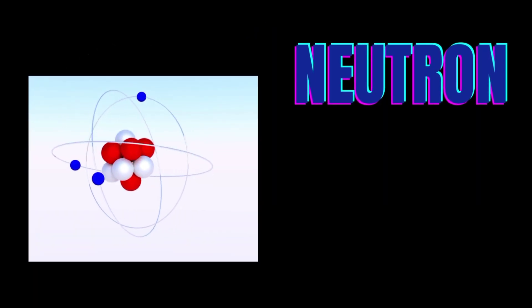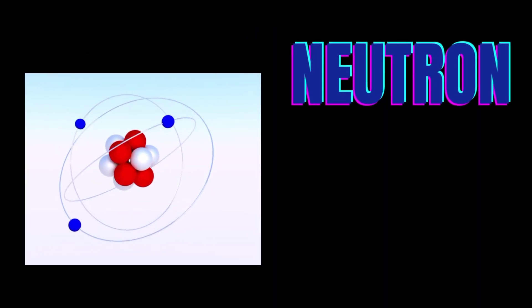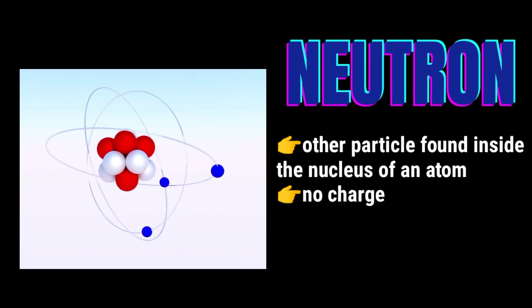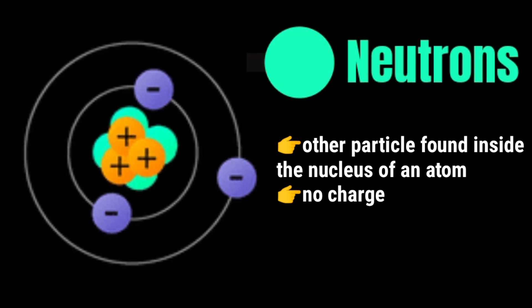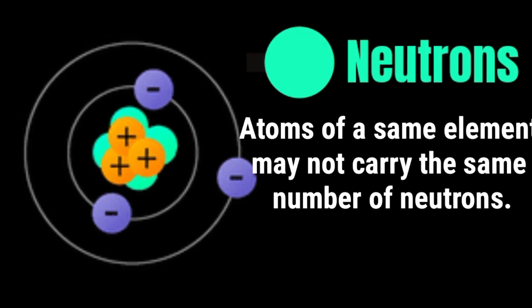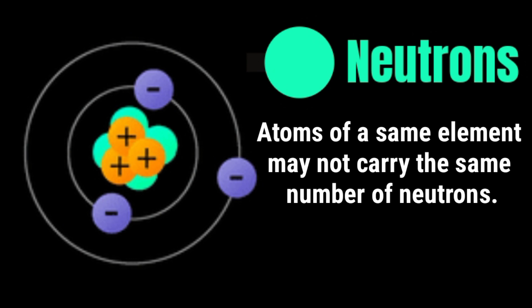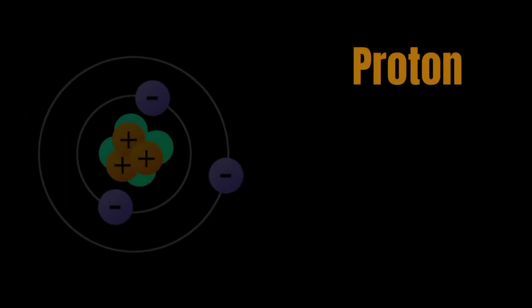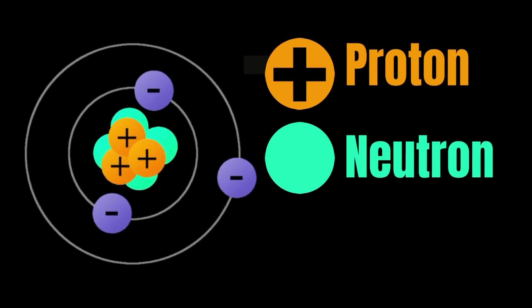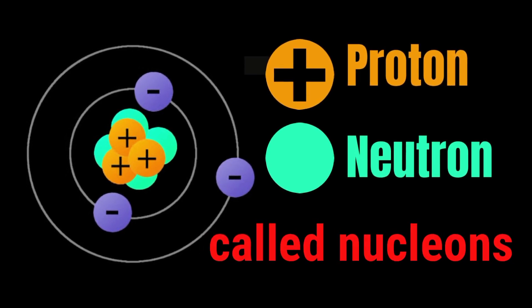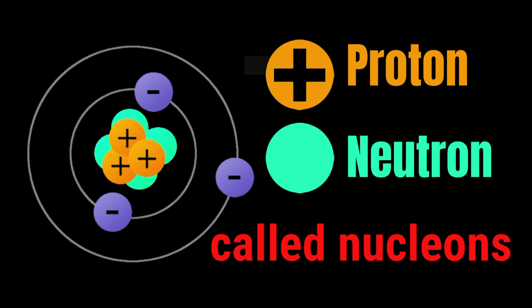Neutrons are the other particles found inside the nucleus of an atom. Neutrons have no charge. Atoms of the same element may not carry the same number of neutrons. Protons and neutrons contribute to the mass of the atom. Protons and neutrons are called nucleons because they are found inside the nucleus.